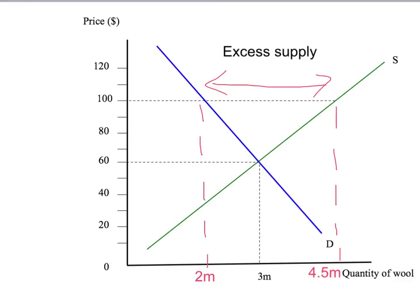But the story doesn't end there. The government now has a problem. Consumers only want to buy 2 million bales of wool, but the farmers still want to produce 4.5 million bales of wool. So the government has to try and work out what on earth it's going to do with the extra 2.5 million bales of wool without excess supply. Now governments around the world deal with this in different ways.